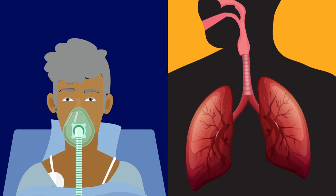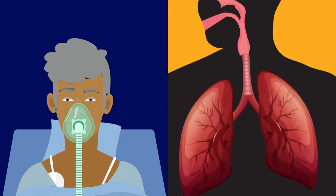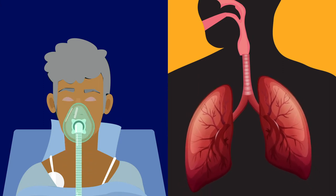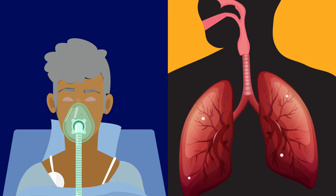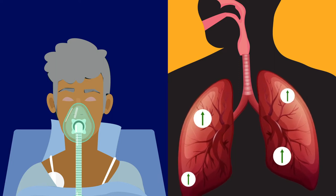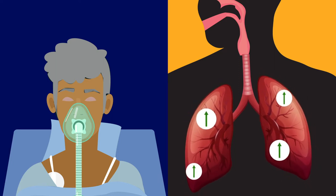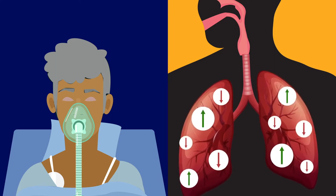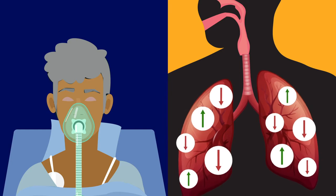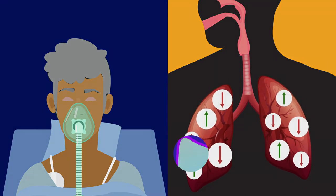When patients undergo general anesthesia, there's a shift in the distribution of ventilation and perfusion throughout the lung, with more areas of the lung getting too much air relative to the amount of blood flow and others getting too little.